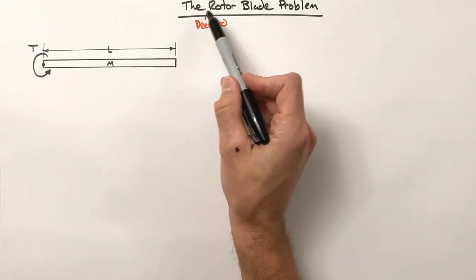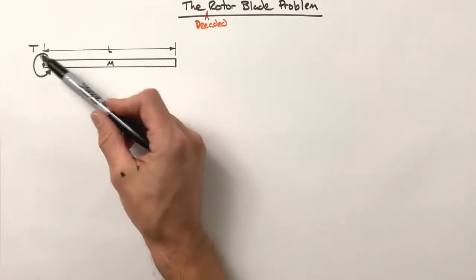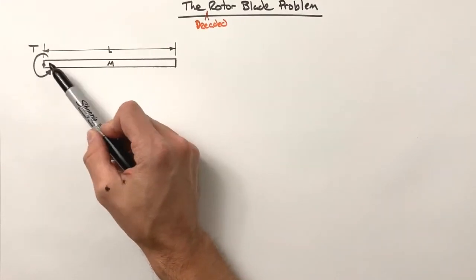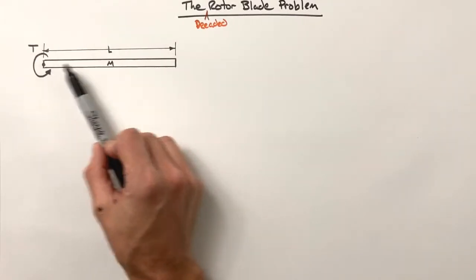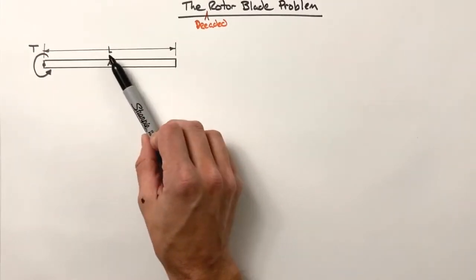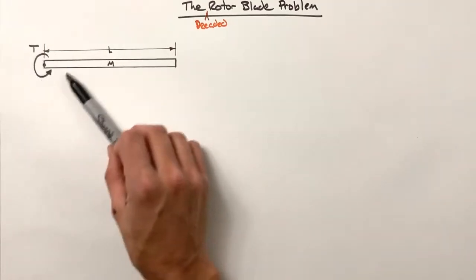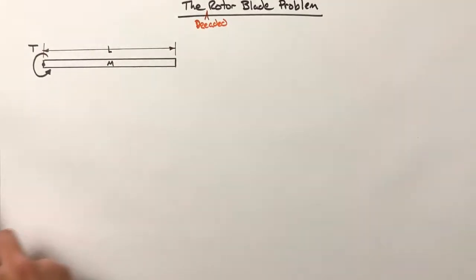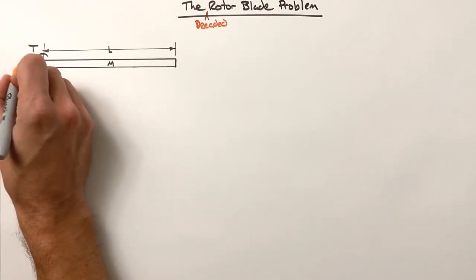What we have here is what's called the rotor blade problem. This is something we would see on the top of a helicopter that's going to rotate around with some period T. This blade has a length L and a mass M, and as this rotates around the whole thing is going in a circle, so there's going to have to be some centripetal force on this blade. What we're going to do is solve for the total force between the axle and the blade.